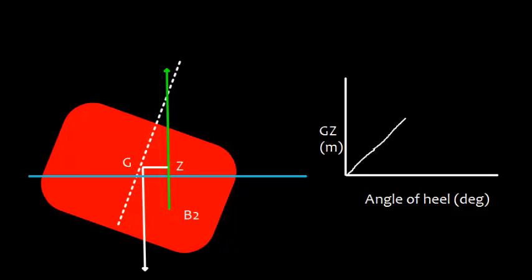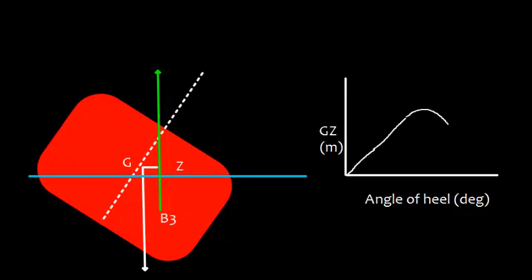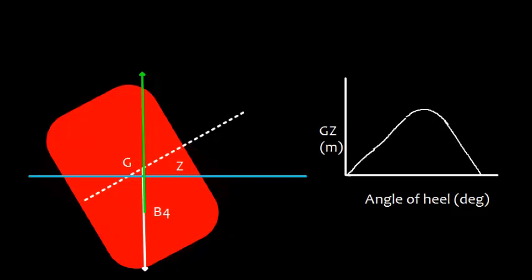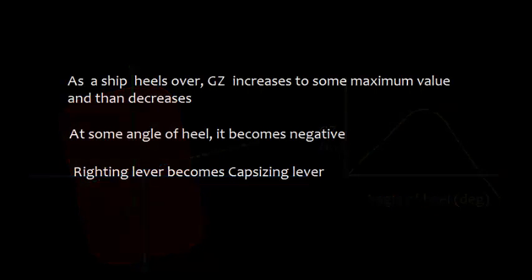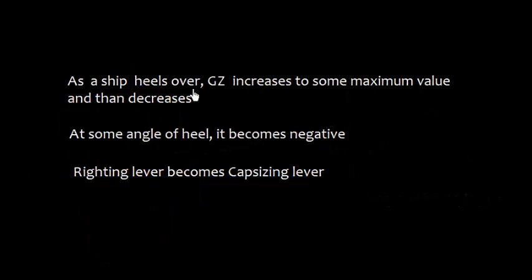It is increasing, then it goes to maximum value, after that it starts decreasing and then it becomes negative. So we can see that as the ship heels over, GZ increases to some maximum value and then decreases. So at some angle of heel it becomes negative and we can say that the righting lever has become a capsizing lever.